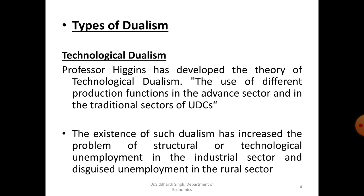There are different types of dualism: social dualism, financial dualism, economic dualism, and technological dualism. In this lecture, we will discuss technological dualism. This concept was given by Professor Higgins, who defined technological dualism as the use of different production functions in the advanced sector and in the traditional sector of underdeveloped economies. The existence of such dualism has increased the problem of structural or technological unemployment in the industrial sector and disguised unemployment in the rural sector.